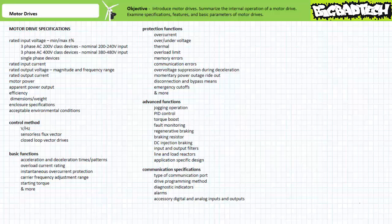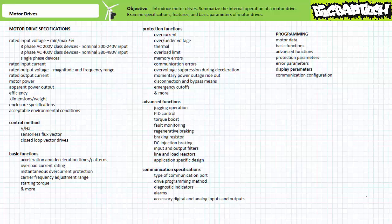Motor drive specifications also include details about means of communication, including the type of communication port, the drive programming method, diagnostic indicators and alarms, and the number and type of digital and analog inputs and outputs. Drive programming and communication configuration deserve a brief comment before we bring this lecture to a close.